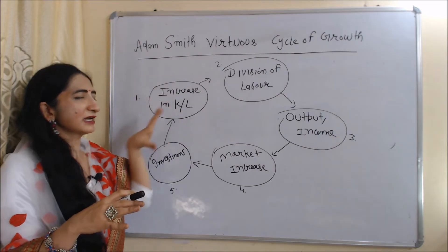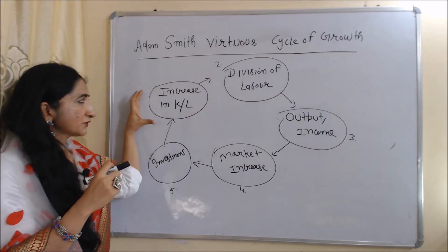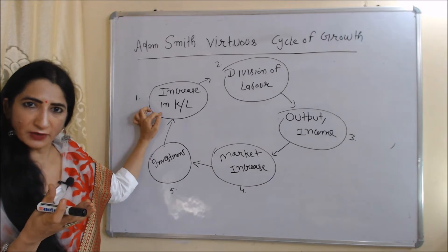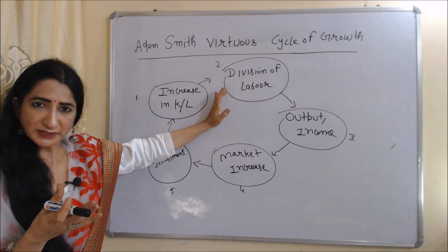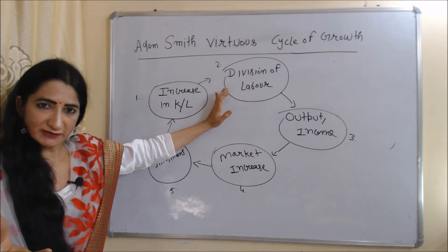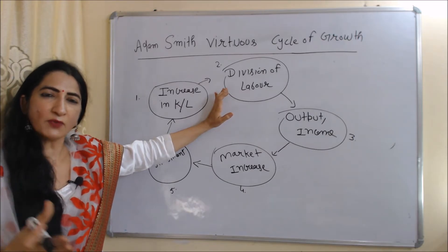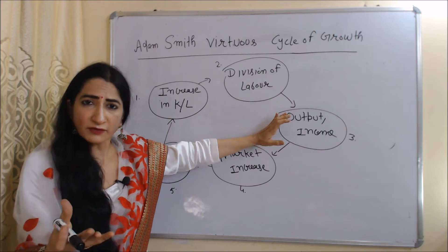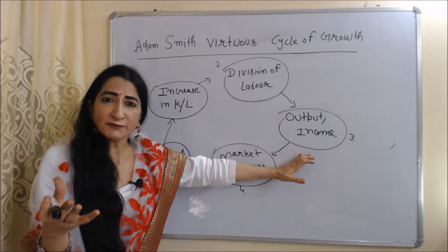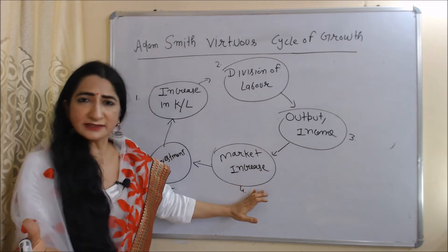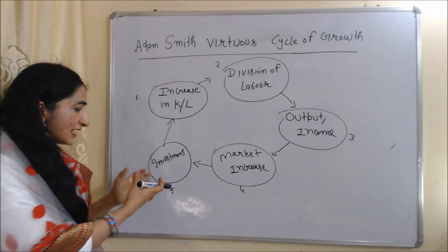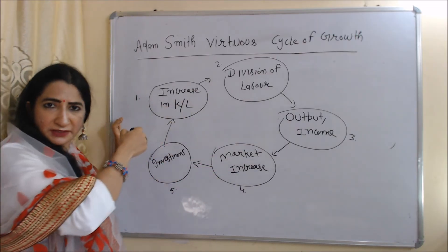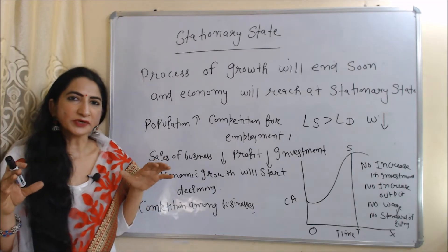We can understand the process of growth through Adam Smith's virtuous cycle of growth. Because of capital accumulation, the capital-labor ratio increases, meaning more machinery is available for labor. Proper division of labor becomes possible, workers operate according to their specialization, productivity and output increase, and wages increase. Rising income boosts demand, sales increase, businesses expand their market and invest more, leading to more capital accumulation — and this cycle continues as the process of growth.